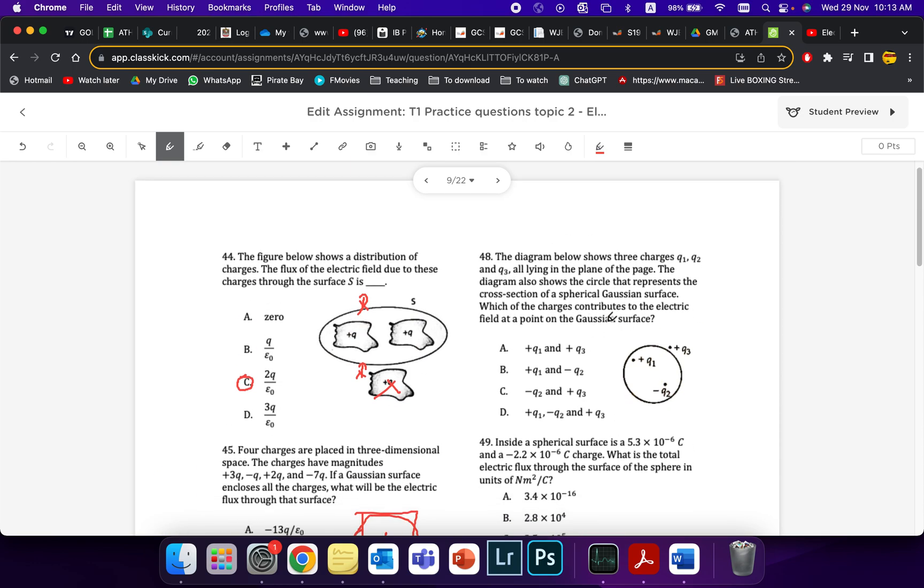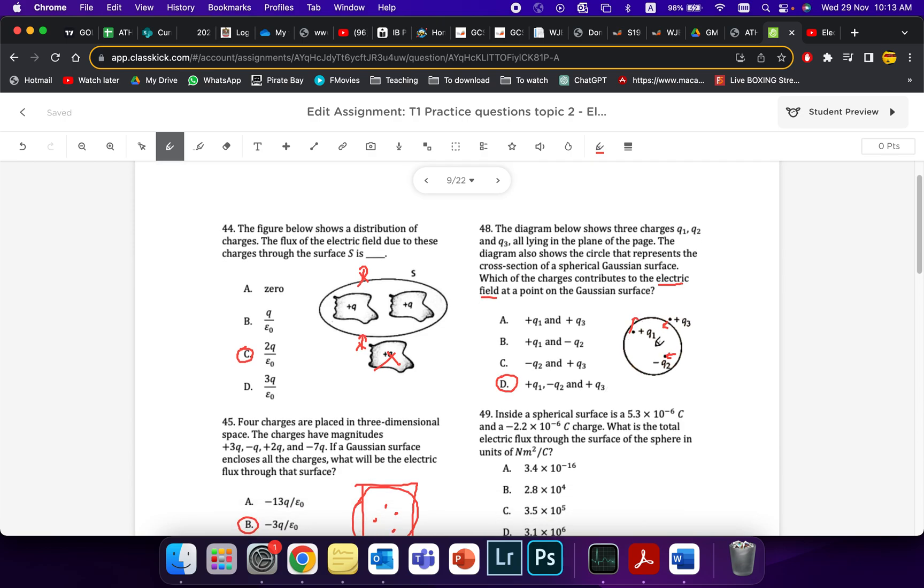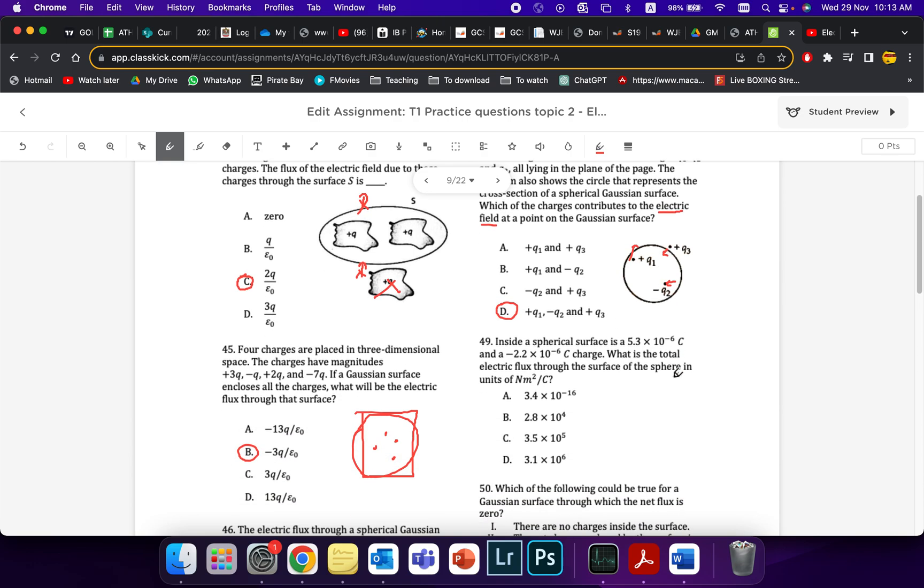Alright, over here, this is now asking which ones will contribute to the electric field. Electric field, not the flux. Be careful now, it's asking you which ones will contribute. Every charge has a field. Every charge has a field line passing through. This one just happens to cancel itself out when it comes to the flux. But it still has the field. This is coming inwards as well. So these are coming out, out, and in. They all contribute to the field, not the flux. So D would be the answer. For the flux, it would just be the enclosed charge. Okay, be very careful with that.